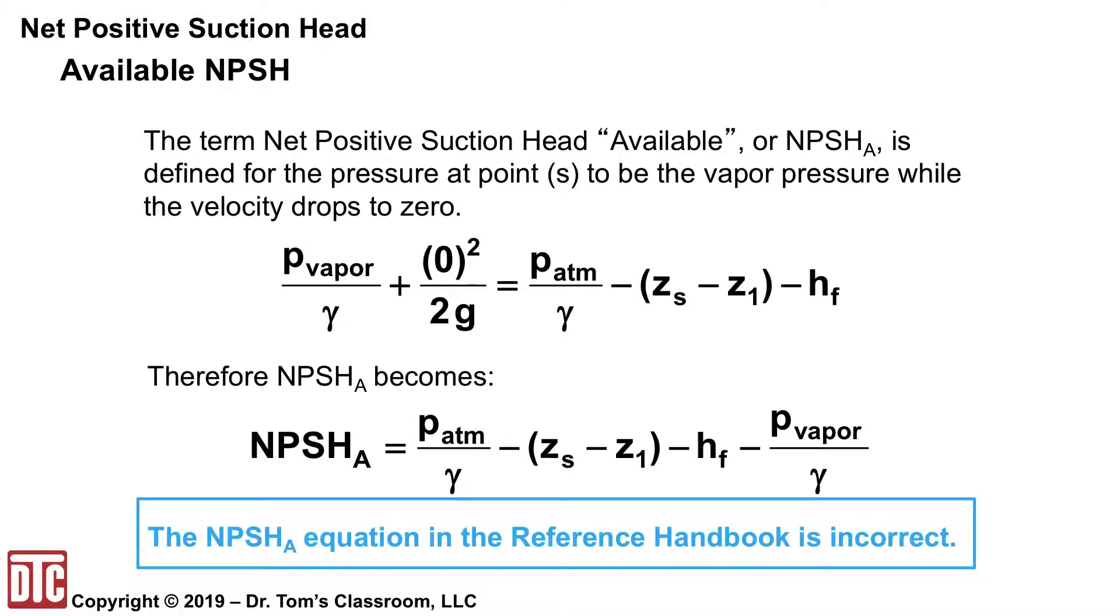Now the reference handbook is incorrect in the sense that it carries some residual velocity as it enters the suction side. And that's not in any of the references and not even in the solution of some of these kinds of problems in the NCEES reference or the NCEES practice exam. So hopefully they'll correct that in some future revision of the reference handbook.